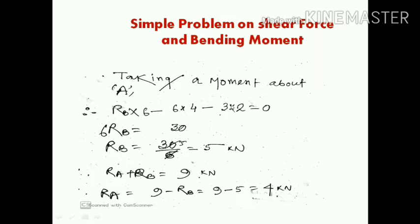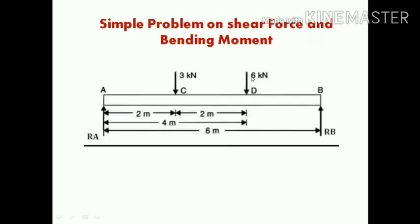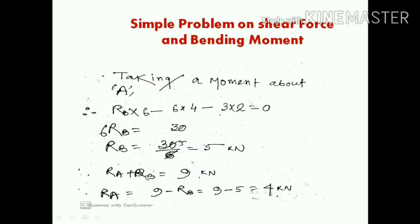Solving: 6 into 4 is 24, and 3 into 2 is 6, giving a total of 30. So Rb into 6 equals 30, therefore Rb equals 30 divided by 6, which equals 5 kilo newtons. Substituting back into Equation 1: Ra equals 9 minus 5, so Ra equals 4 kilo newtons.